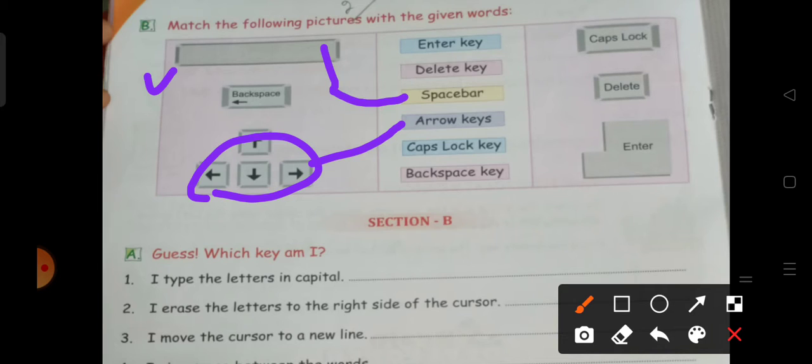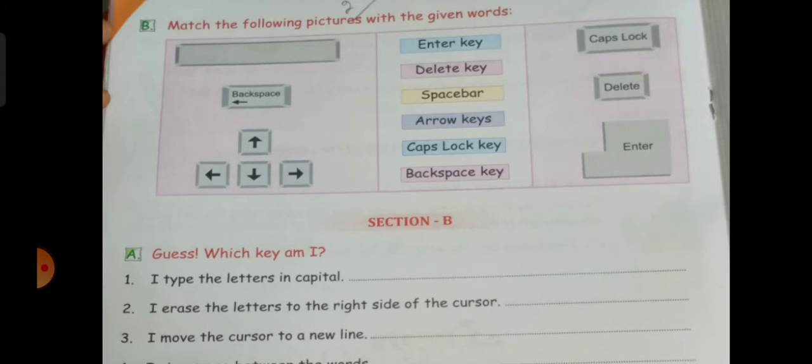Here is the backspace key, which is used for erasing letters. Caps Lock, Delete, Enter—you can see text is also written on each key, so you can easily match it. Now coming to Section B.